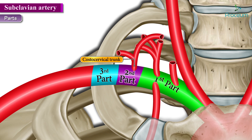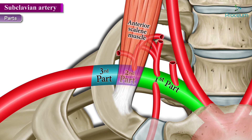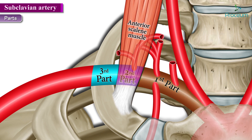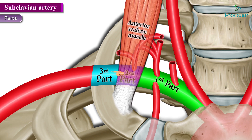The third part is the last part of the subclavian artery and lies lateral to the scalenus anterior muscle. To summarize: the first part is medial, the second part is posterior, and the third part is lateral to the anterior scalene muscle. The third part gives off an important branch called the dorsal scapular artery.